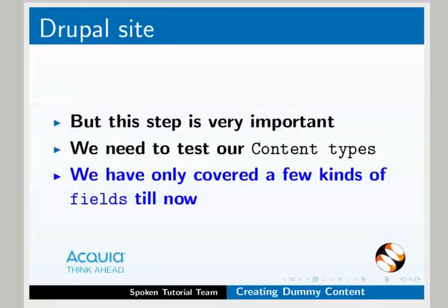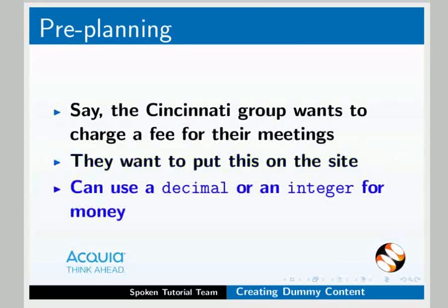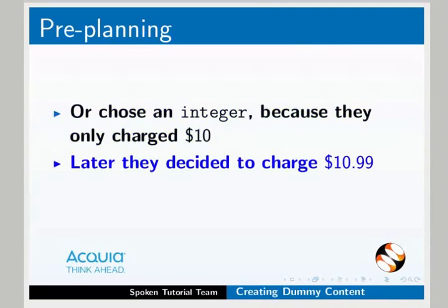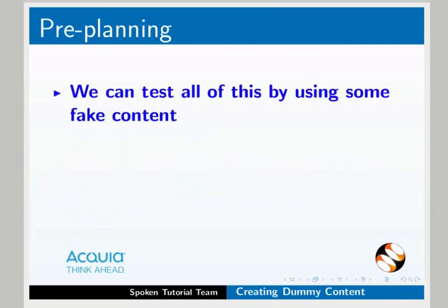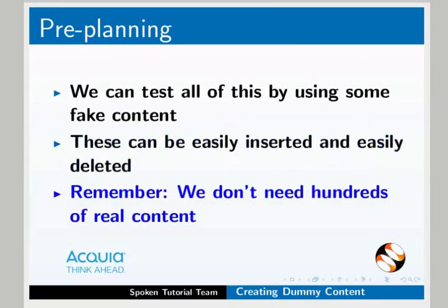We have only covered a few kinds of fields till now. Here is our Cincinnati note. Let's say the Cincinnati group wants to charge a fee for their meetings and they want to put this on the site. We can use a decimal for money or an integer which is a whole number. Say you choose an integer because they only charged $10, but later on they decided to charge $10.99 — then we are in trouble. An integer cannot be changed into a decimal especially after we've already added content. These are the things that need to be planned out beforehand. We can test all of this by using some fake content, which can be easily inserted and easily deleted when we are done with our testing. Remember, we don't need hundreds of real content, but only a few fake content.